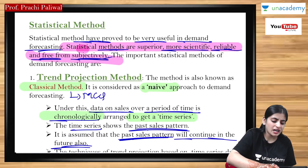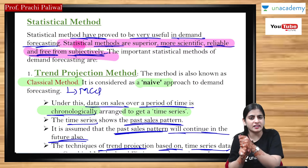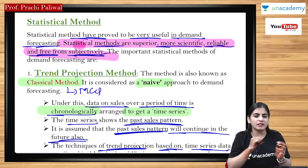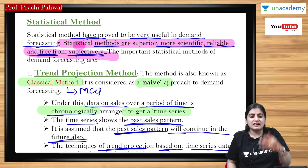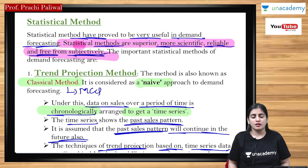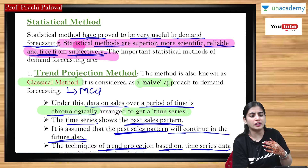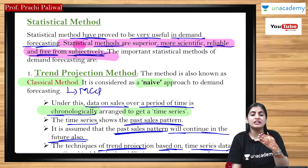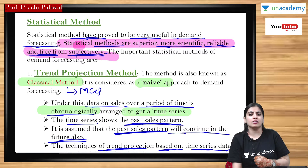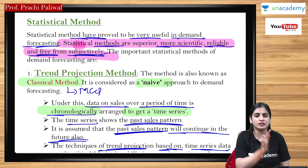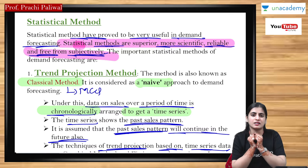The fourth method is the statistical method. Statistical method will give you the most reliable information, and here we use scientific tools for calculating the demand forecasting. This will give you more superior and more reliable data as compared to the other methods.